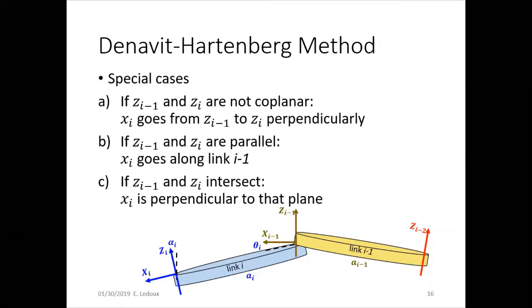If they're parallel, X goes along the link, that perpendicular distance again between them. But if the two Z axes intersect, so there is no parallel distance between them, then the X axis just goes perpendicular to the plane that those two form.